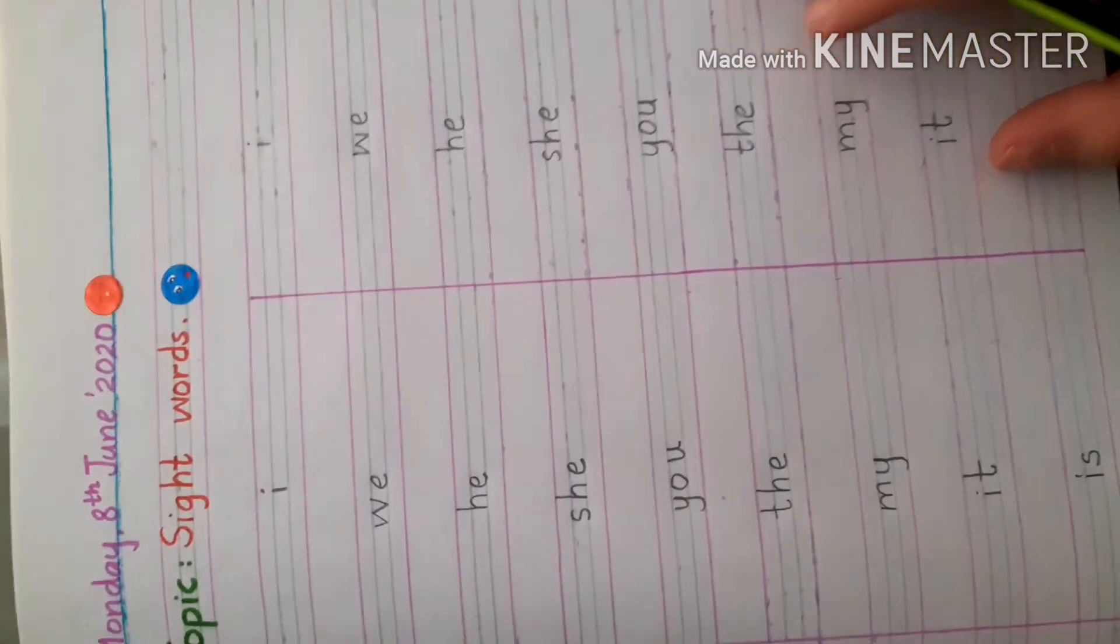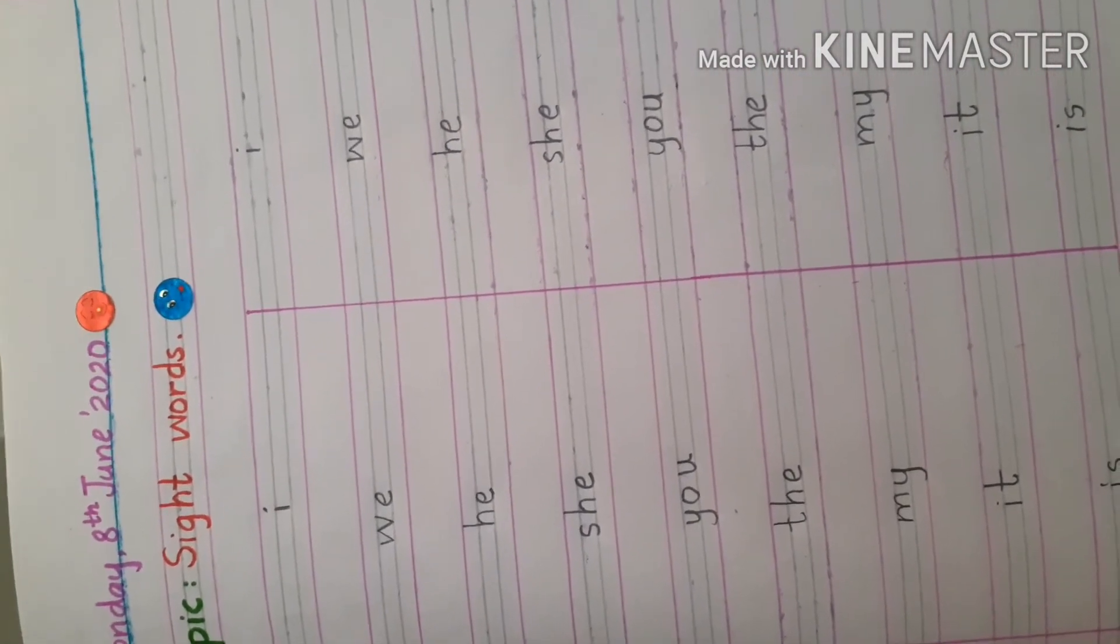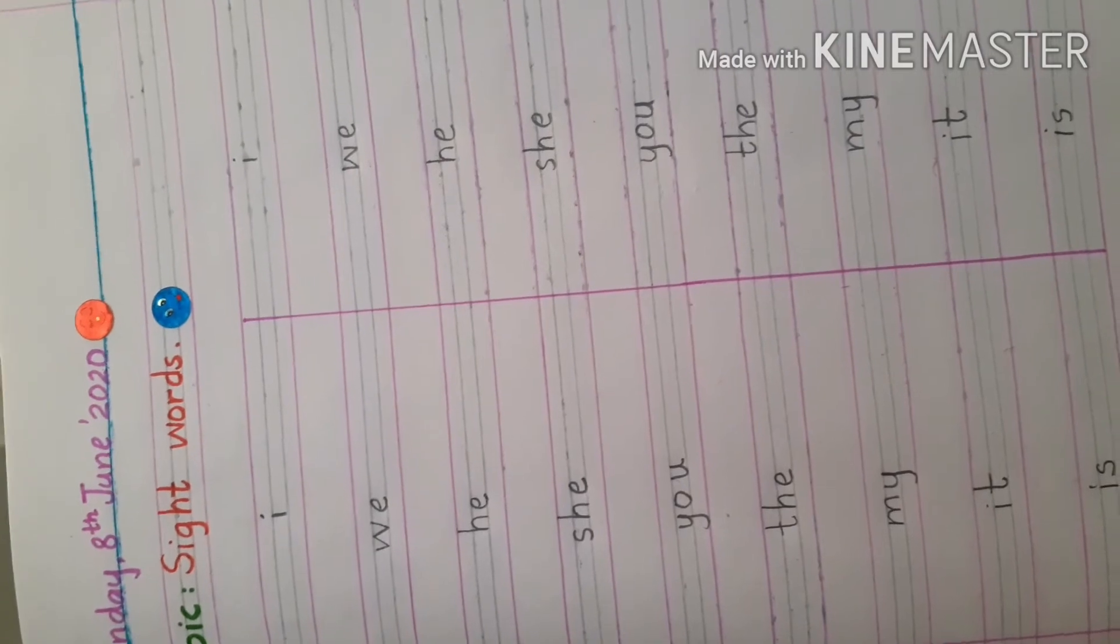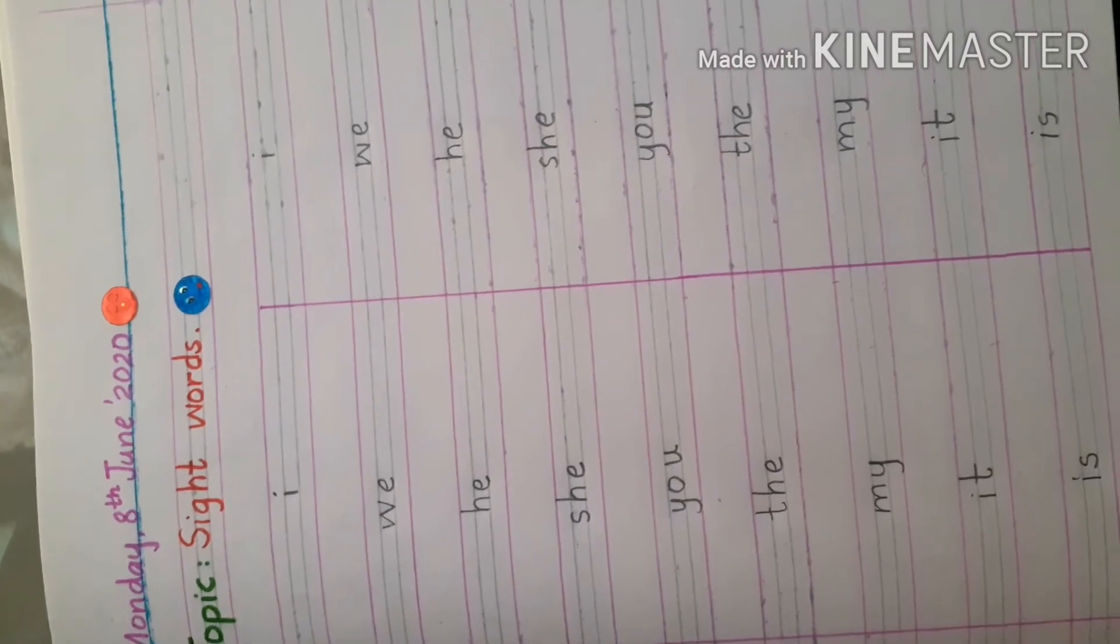So these are the sight words. Which words? Sight words. They are special because they often do not follow the rule of phonics. We don't read them from phonics.